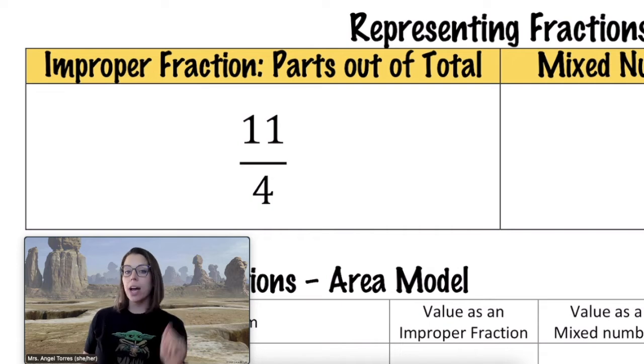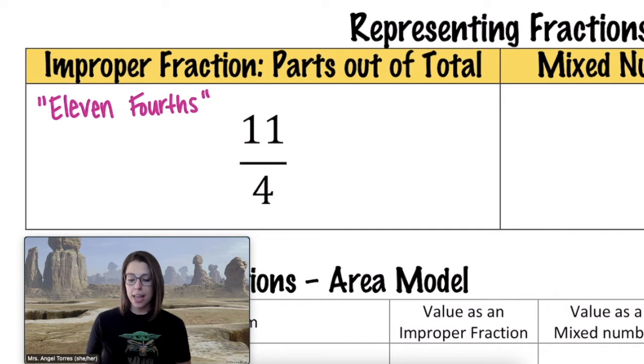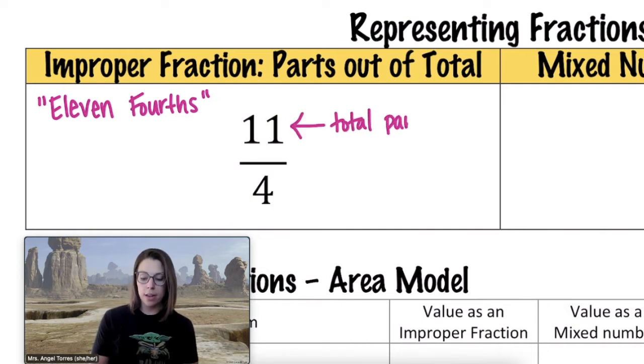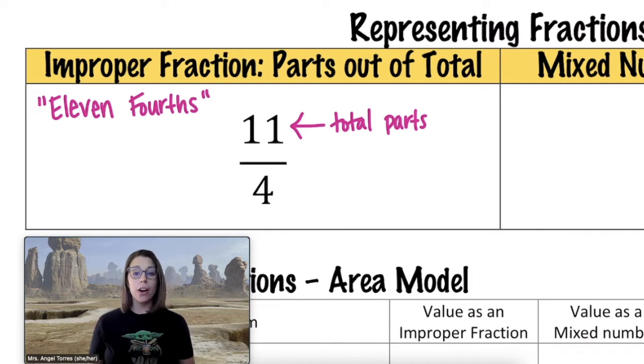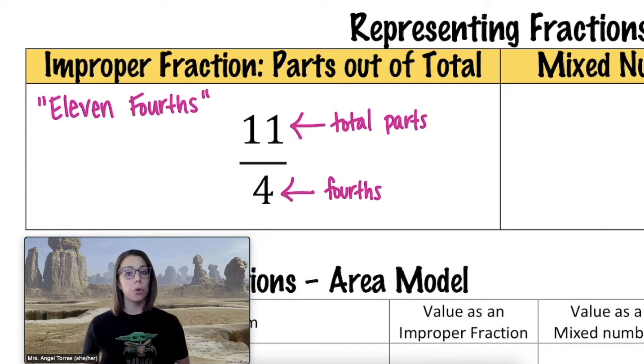When we read this fraction here, we would read this as 11 fourths, and essentially that means that there are 11 total parts that we're looking at, and each part is one fourth of a whole, which of course means that each hole is broken up into four different pieces.